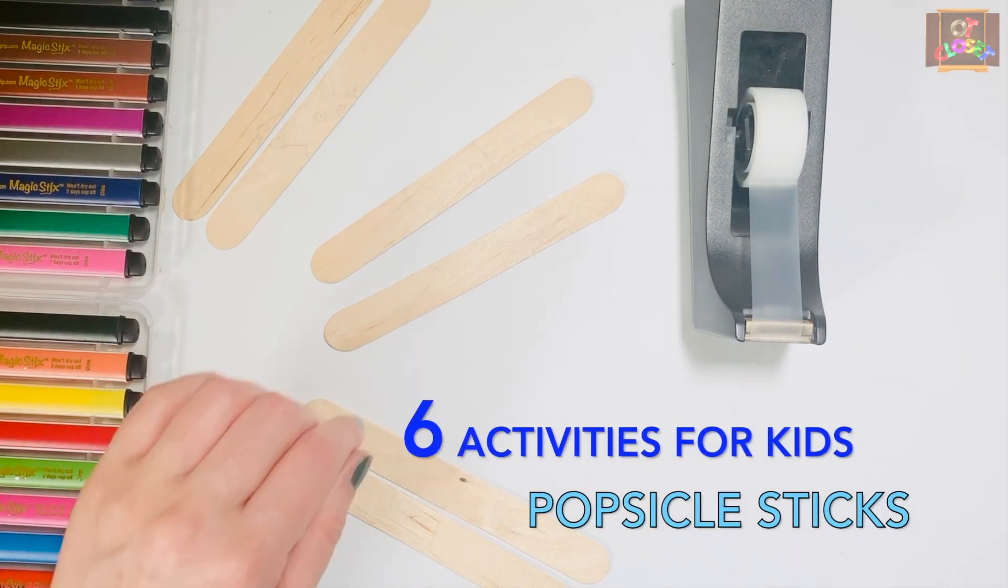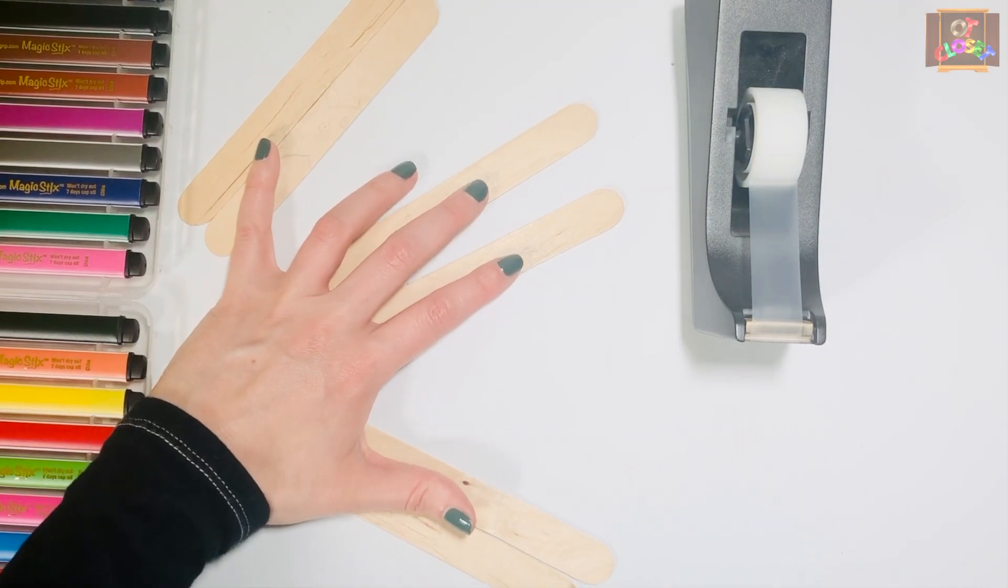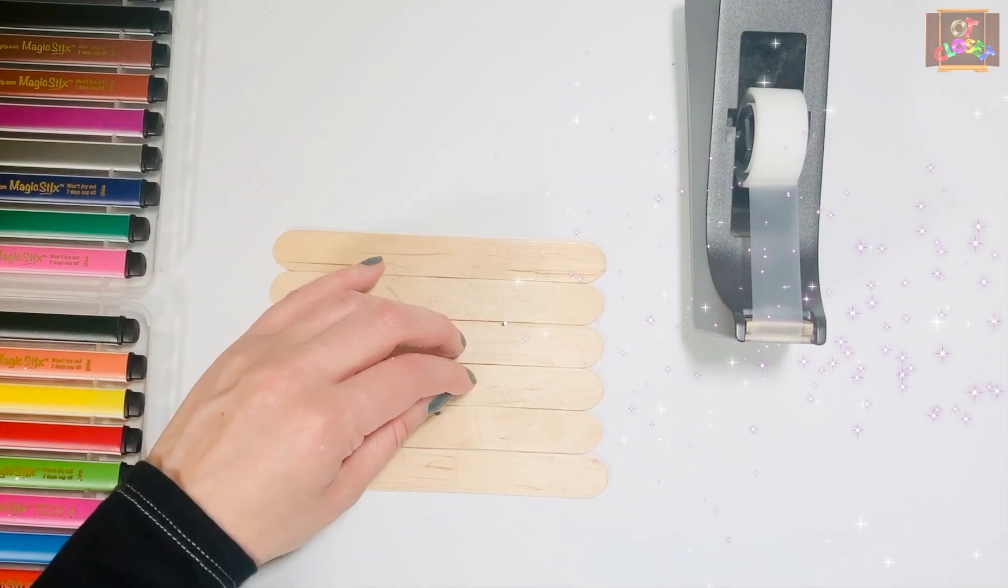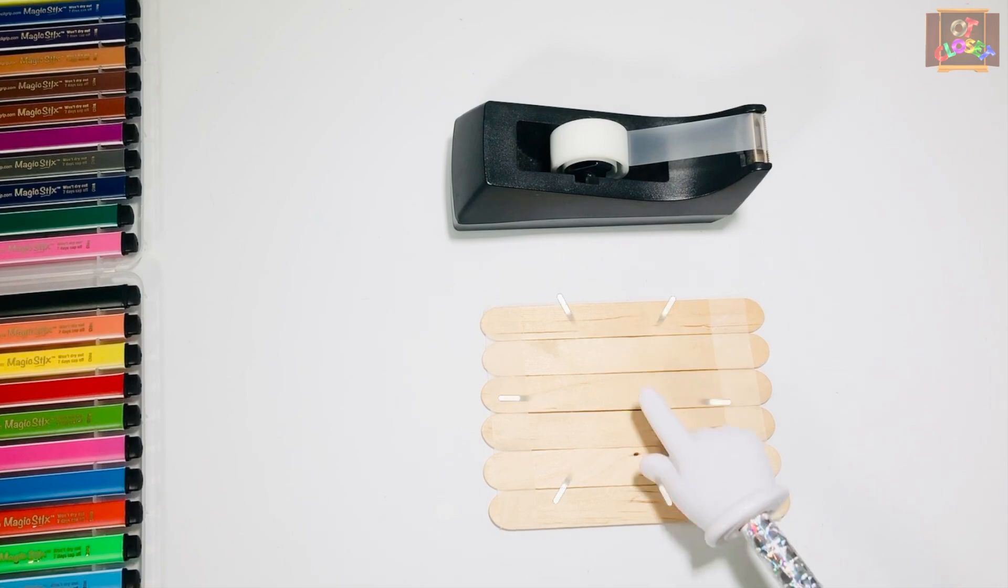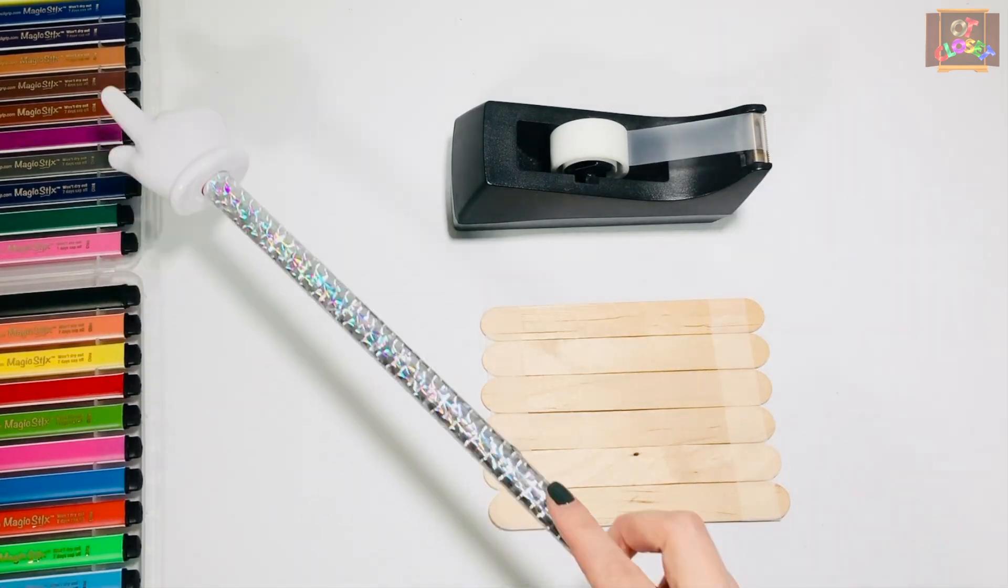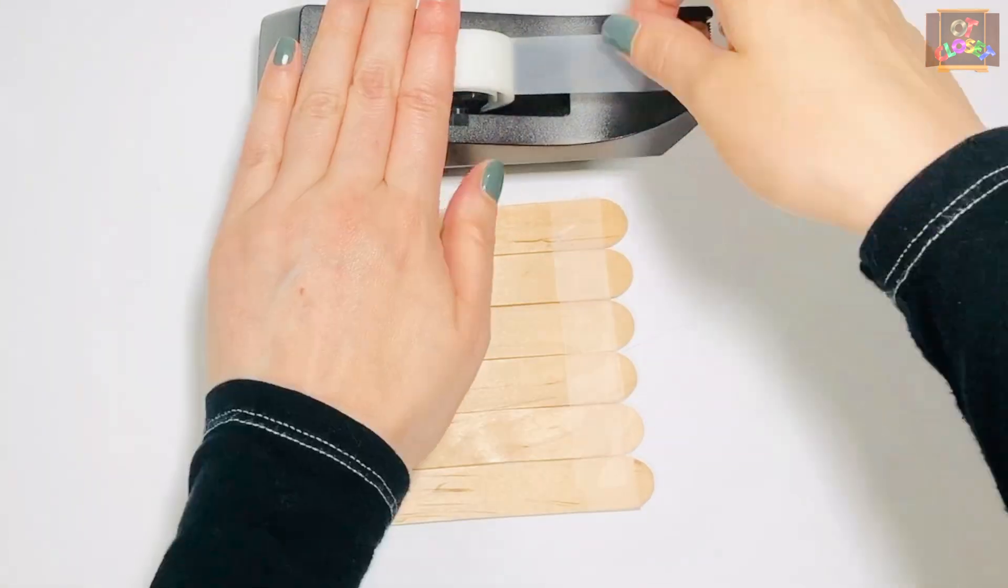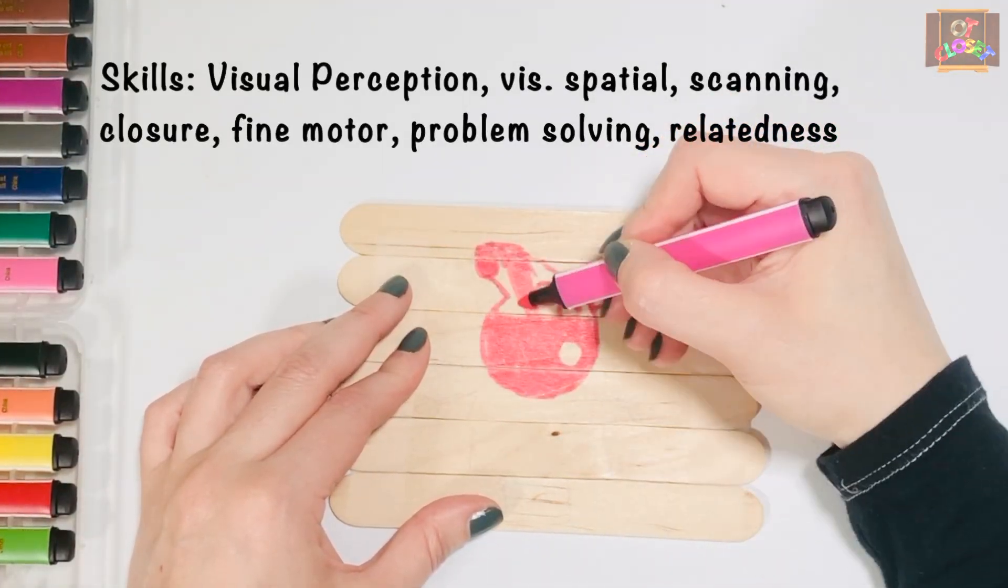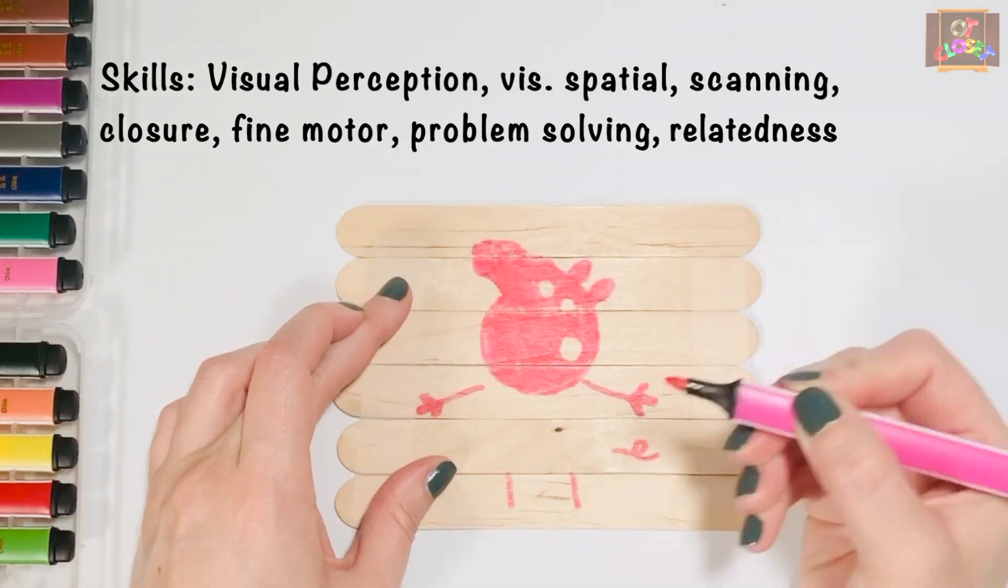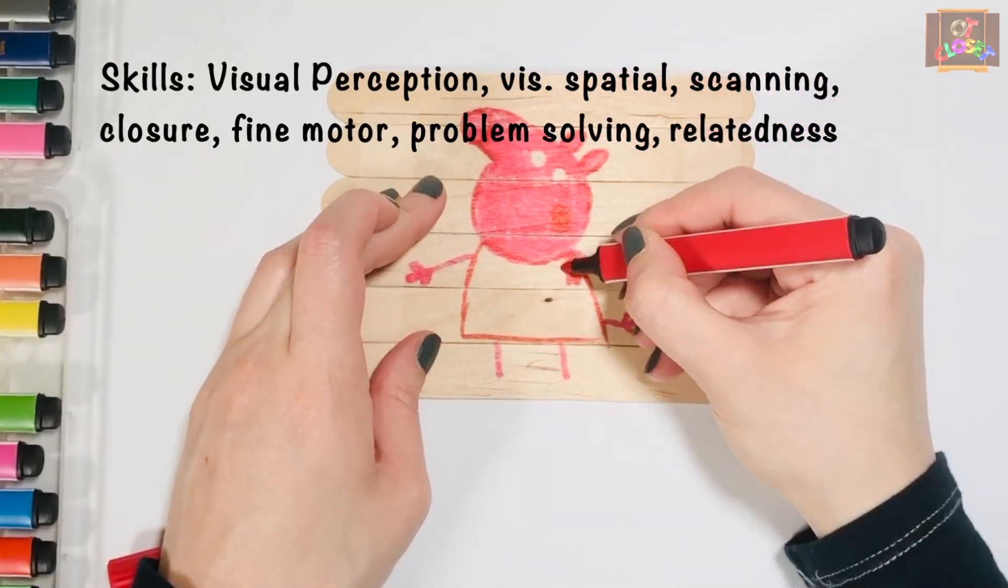Hello everyone, I'd like to share with you six activities for kids using popsicle sticks. Let's make a fun puzzle using six popsicle sticks, scotch tape, and some markers. Use the scotch tape to keep the sticks in place. You can use the markers to draw shapes or pictures. One of the characters that my students love is Peppa Pig.